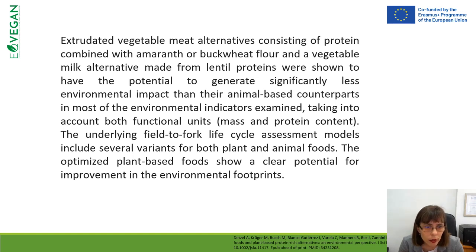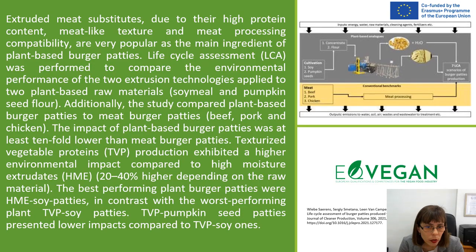Field-to-fork lifecycle assessment models include several variants of both plant and animal foods, and optimized plant-based foods show a clear potential for improvement in environmental footprints. Extruded meat substitutes with high protein content, milk-like texture, and meat processing compatibility are popular as the main ingredients of plant-based burger patties. Life cycle assessment can be performed to compare the environmental performance of different technologies and see the impact on the environment.